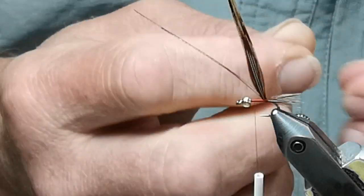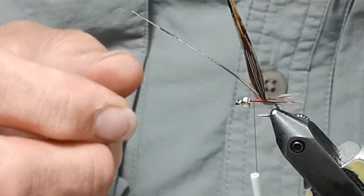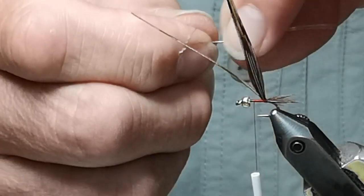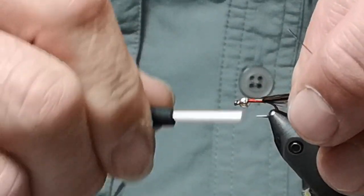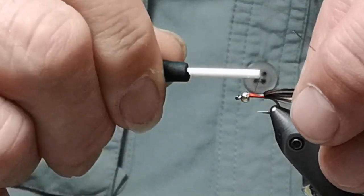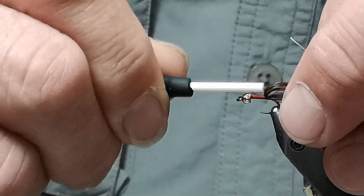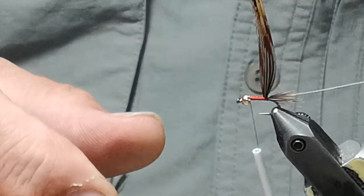Or I like to use this hot yellow wire. If I want this fly to be very bold, I'll use the hot yellow. If I want it to be a little more bland, I'll use the gold wire.